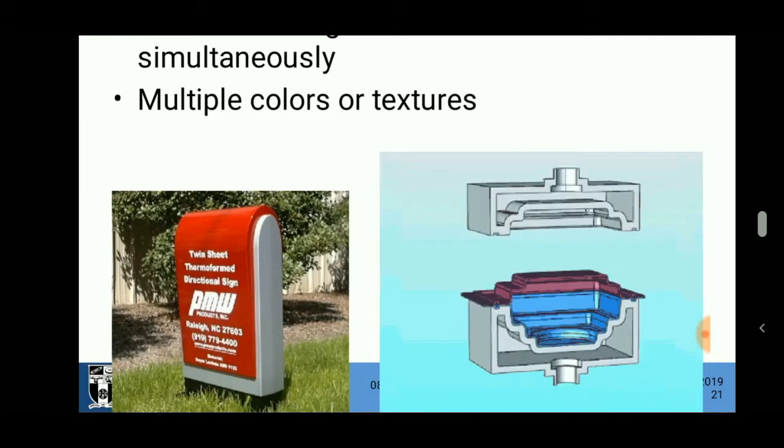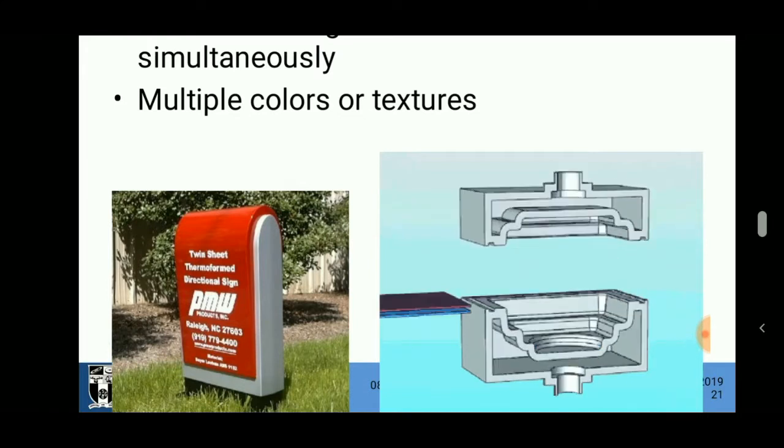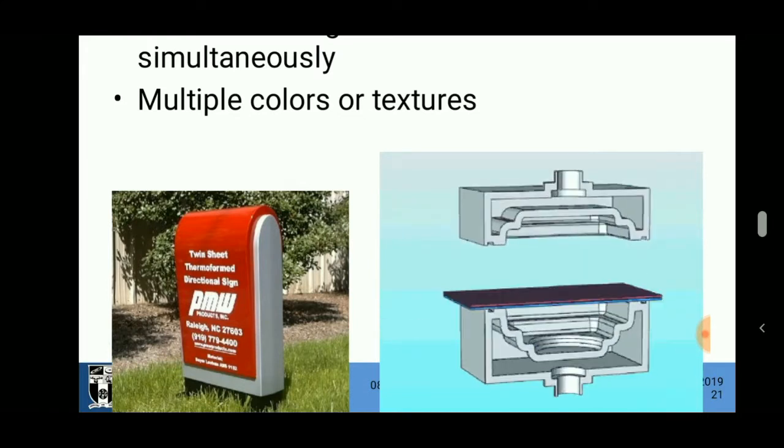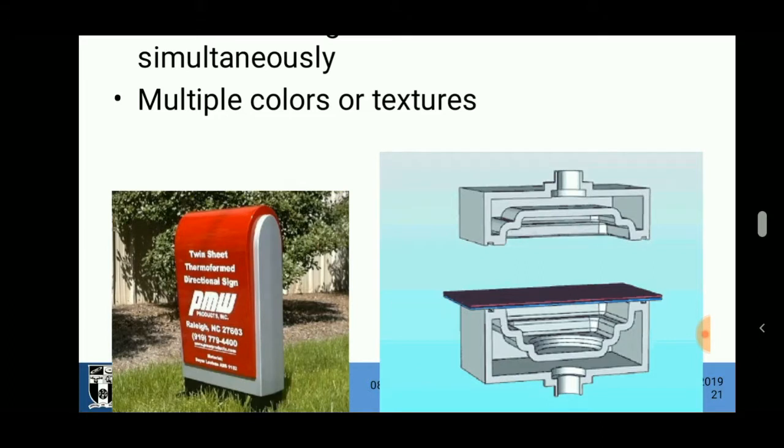A thermoplastic sheet is placed between these molds and they are preheated. The vacuum is switched on so that the sheet deforms and takes up the shape of the mold cavity, and then these two